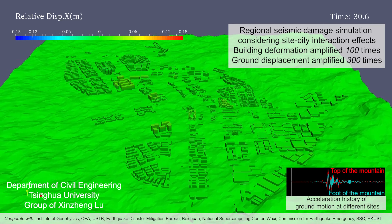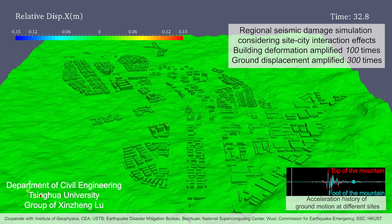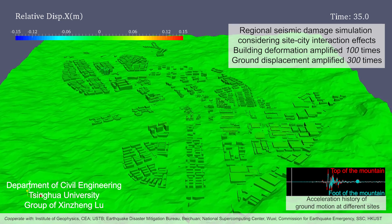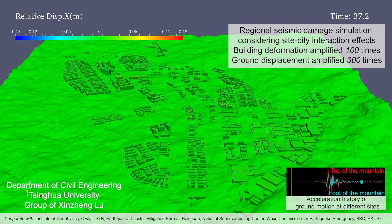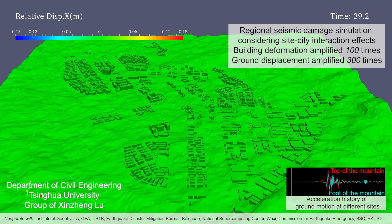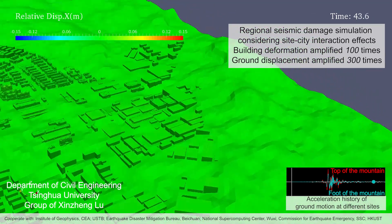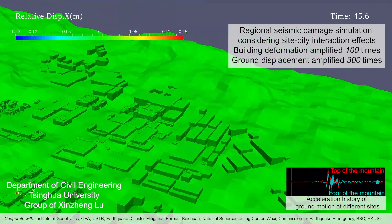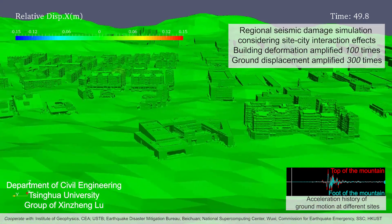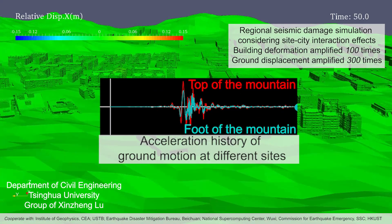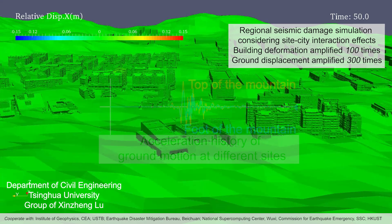The influence of complex terrain can be considered in this study, so as to produce a more reasonable analysis result. For example, the seismic accelerations at the top of the mountain are evidently different from those at the bottom of the mountain.